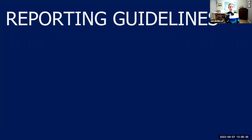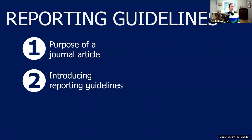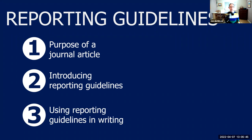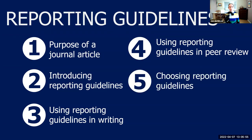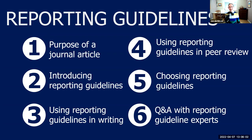In this session we're going to talk about the purpose of a journal article, what reporting guidelines are, and how they can be helpful both in producing your own papers and when reviewing other people's papers in peer review — whether formally or informally. We'll also cover how to choose appropriate reporting guidelines and finish with a panel chat where you can ask any question about reporting guidelines, where they come from, how to develop them — anything like that.